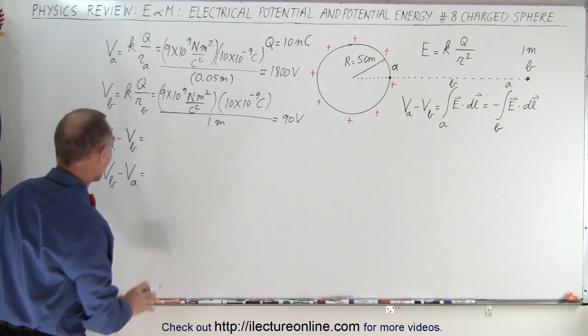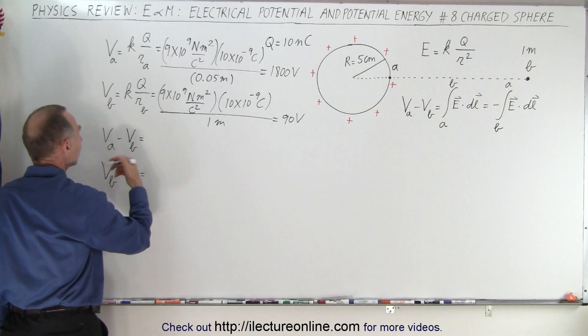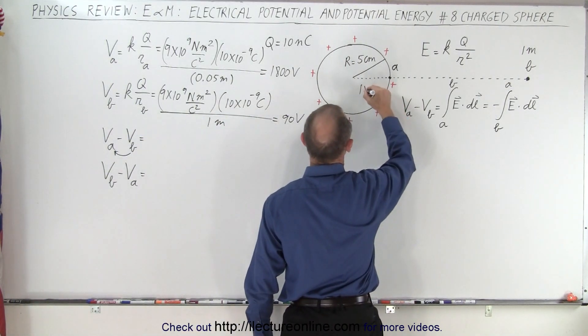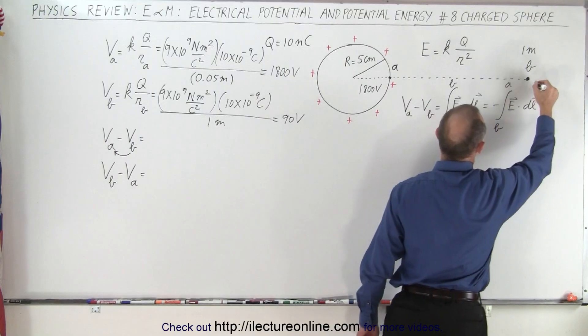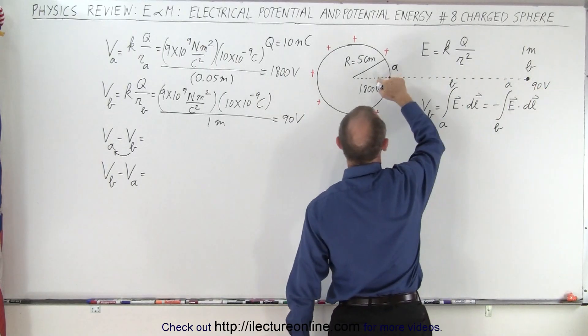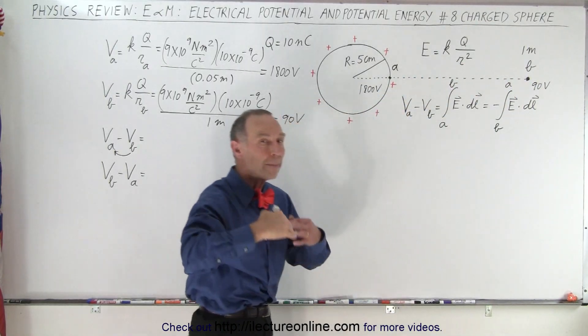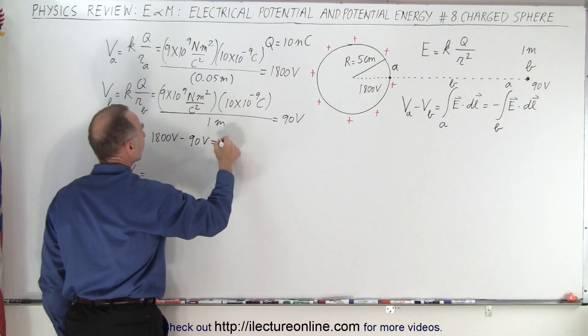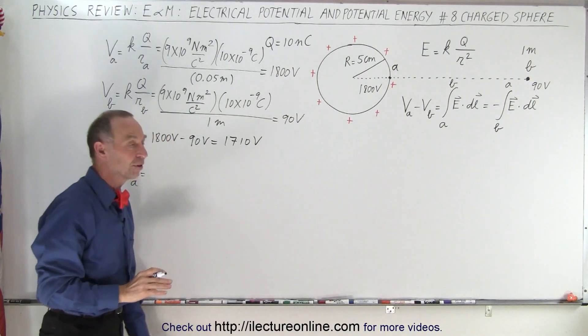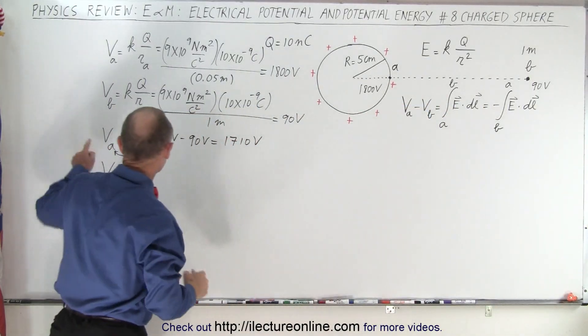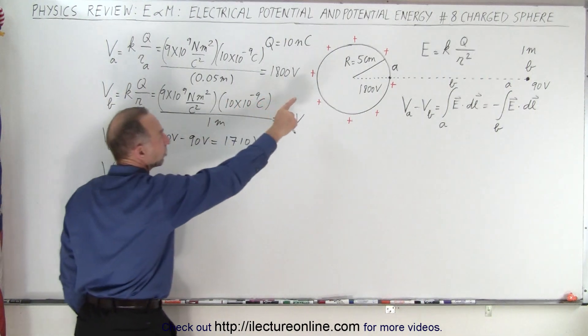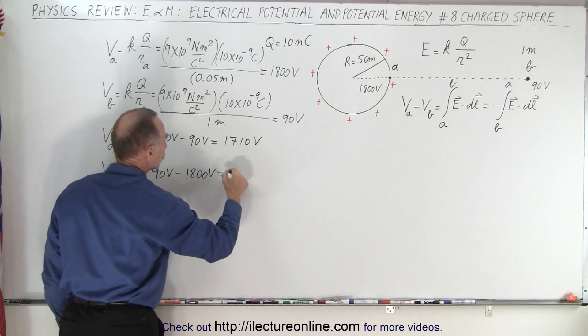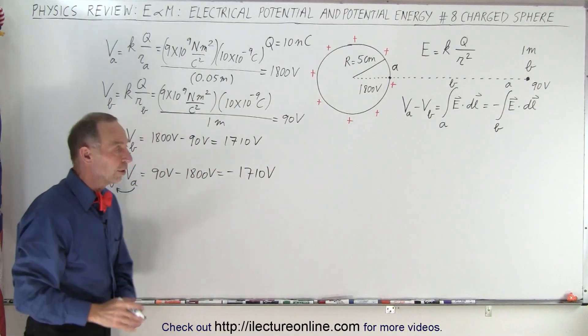Alright, so now we can take the difference. So what do these expressions mean? VA minus VB is the same as starting at B and moving to A and seeing how the voltage changes. So if the voltage at A is 1800 volts and the voltage at B is 90 volts, and we move from this point to this point, that means we move from 90 volts to 1800 volts, that means we go up in potential. Therefore, we write this as 1800 volts minus 90 volts, which is 1710 volts. That's the potential difference moving from B to A. When we reverse the order, now we move from A to B, so we go from high potential to low potential. In this case, this would be 90 volts minus 1800 volts, and so that's a voltage drop of 1710 volts.